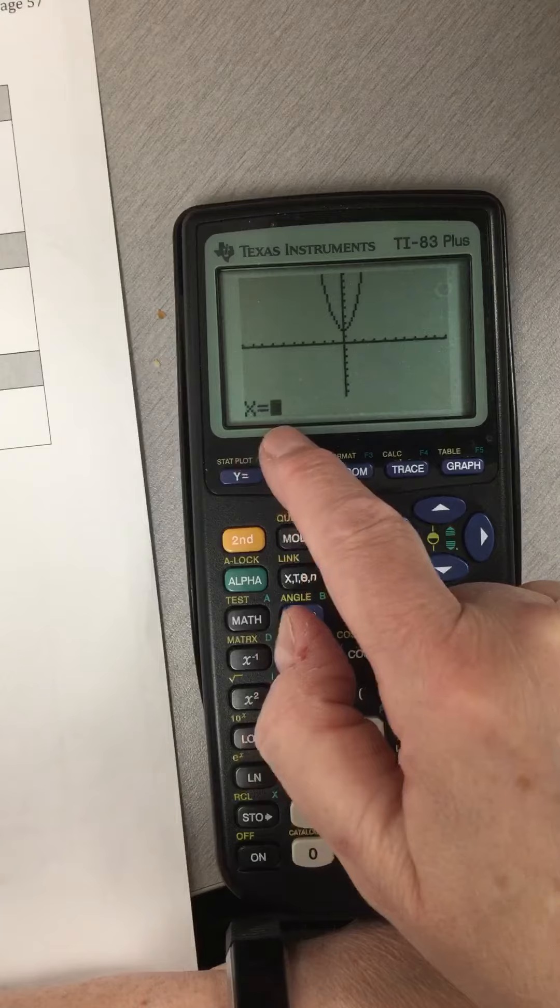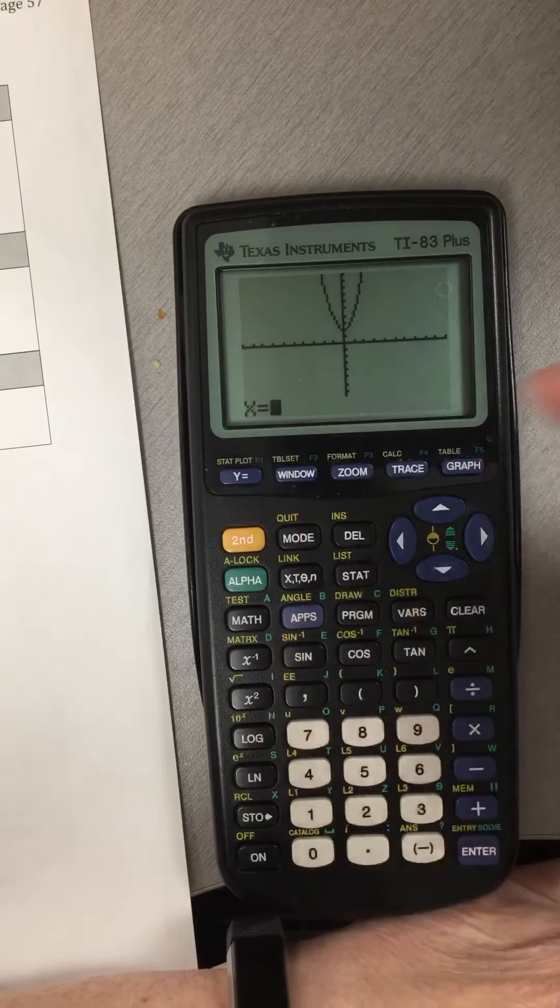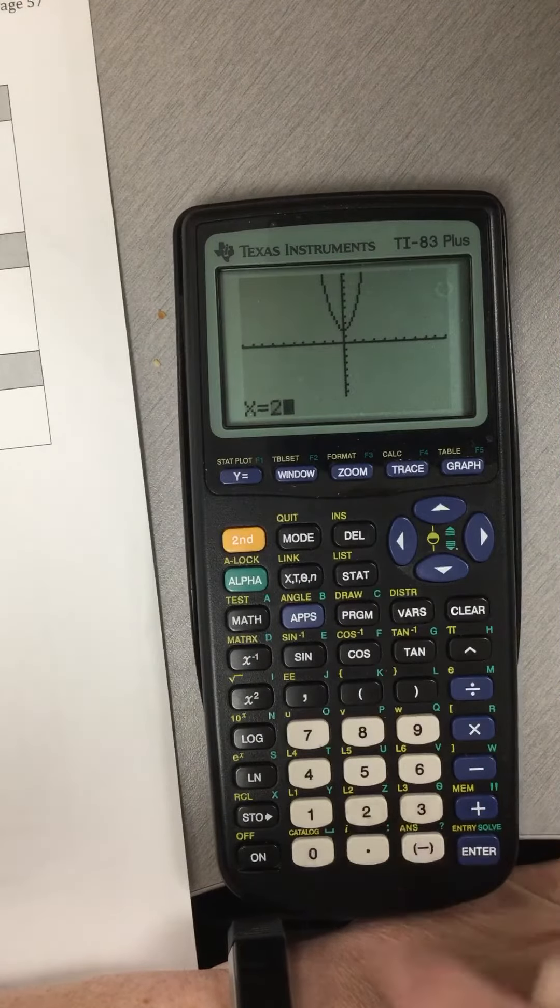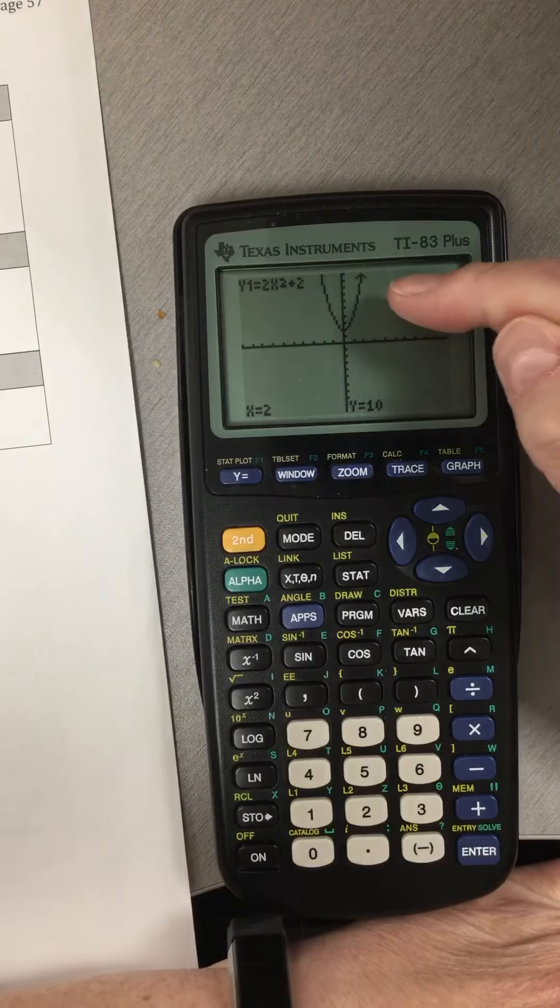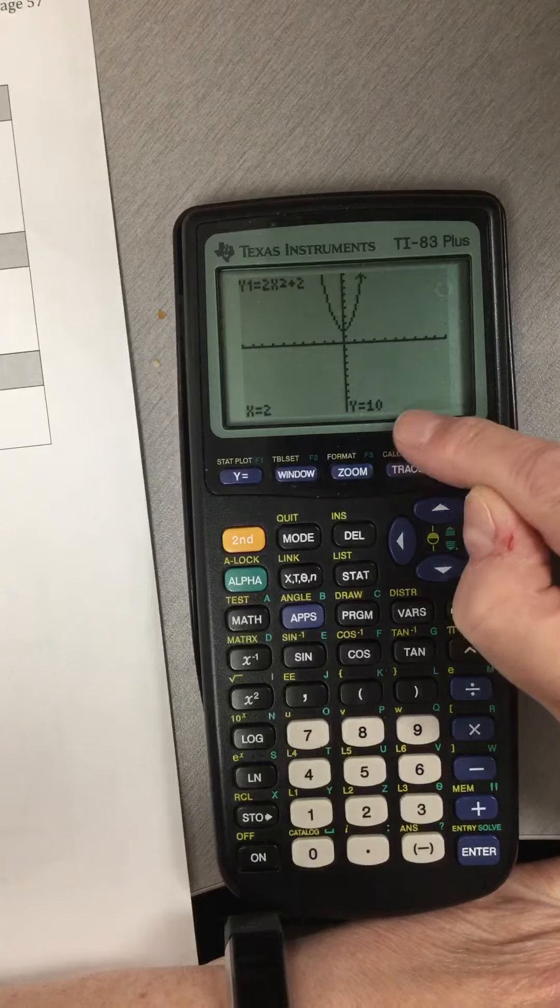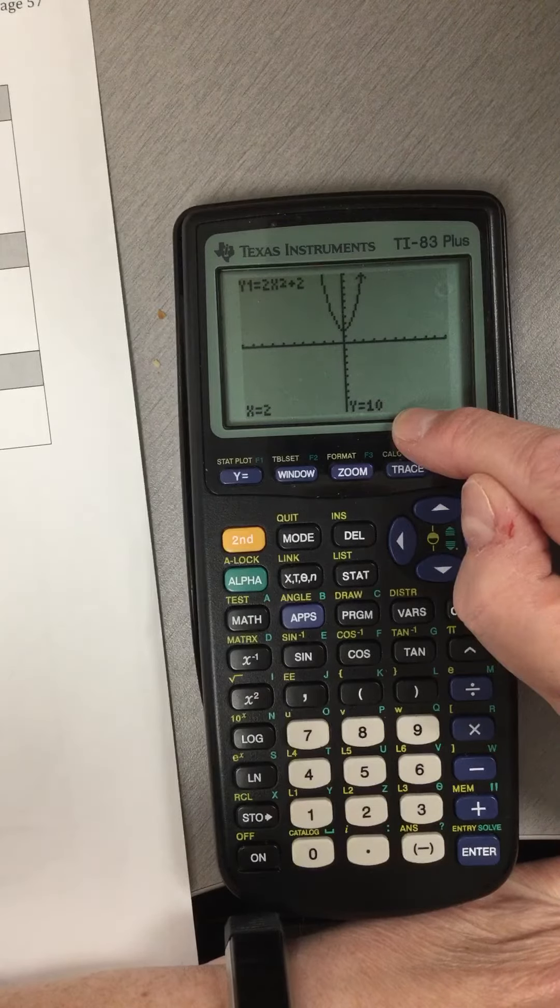Now I'll get at the bottom 'x equals,' and I just put in that value. I wanted to know what y is when x equals 2, so I hit enter, and it tells me that y equals 10 when x equals 2. It's as easy as that.